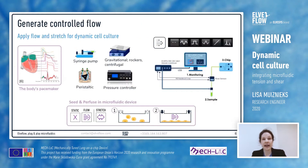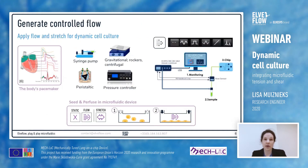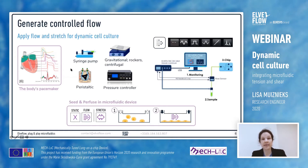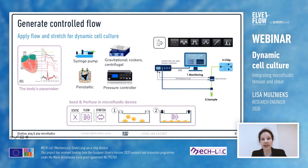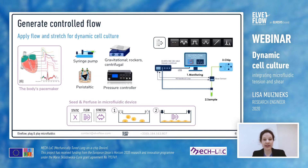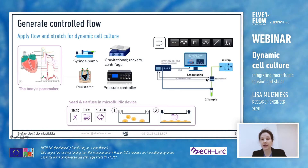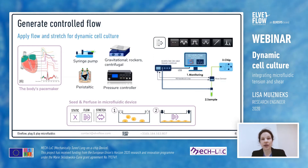So how do you generate and control flow in your system? In the body the heart controls the flow of blood through the circulatory system. In the lab, the most commonly used tools are syringe pumps and peristaltic pumps. However you can also use gravitational forces, for example rocking platforms. For better stability and response time you can also use an electronic pressure controller, for example the OB1 from Elveflow.